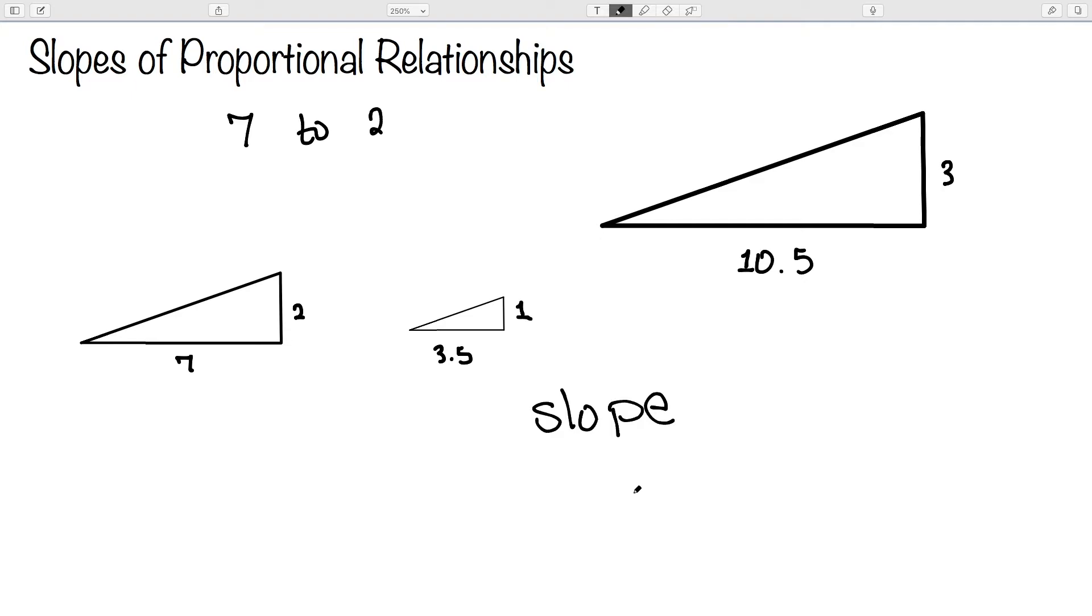And it actually is going to make sense to describe this slope with a constant of proportionality. In previous videos, we've seen that the constant of proportionality can be viewed as a multiplier that relates to the total amounts, which is going to give us an equation for our proportional relationship.